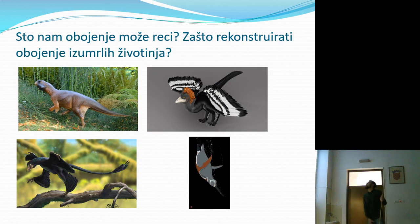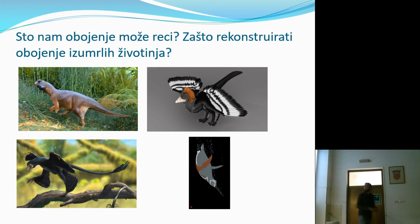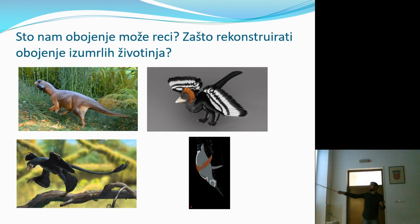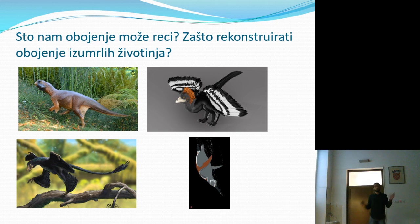Što nam obojenje može reći? Zašto rekonstruirati obojenje izumrlih životinja? Skroz smo drugačije gledali ove četiri životinje prije nego što smo rekonstruirali njihovo obojenje. Boja jako mnogo može reći o organizmu: gdje i kako je živio, evolucija prikazivanja tokom zavođenja, evolucija sjajnog perja, stil života, te evolucija specifičnih prilagodbi s obzirom na okoliš.